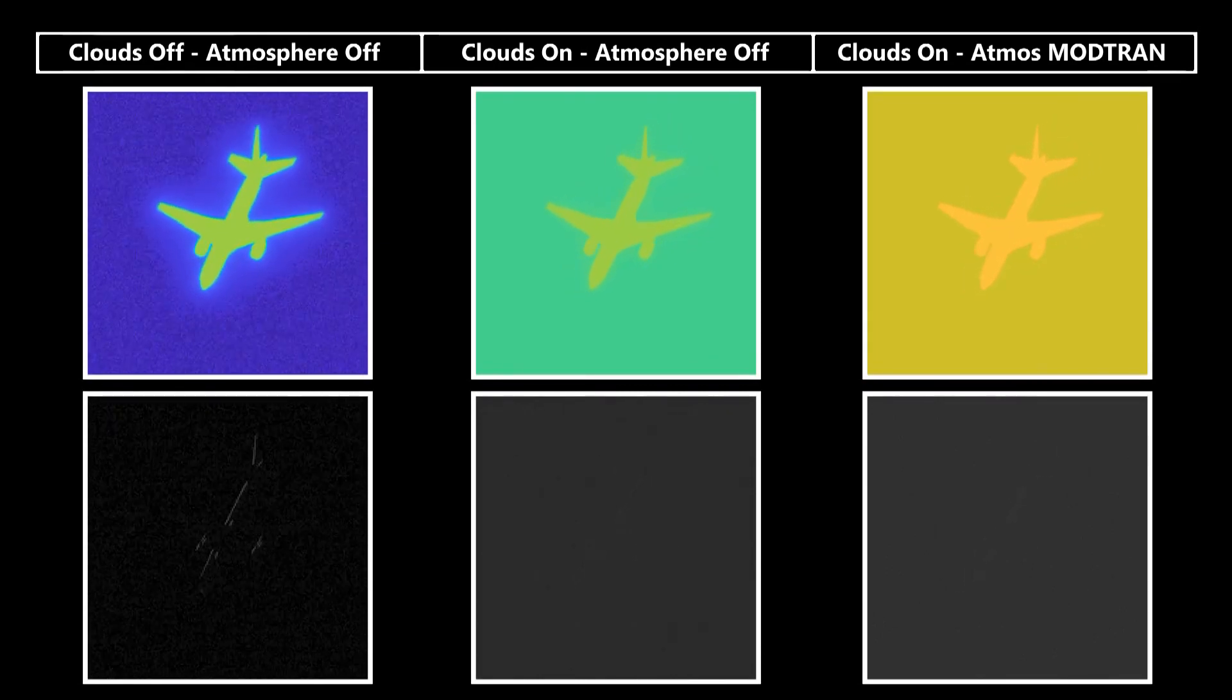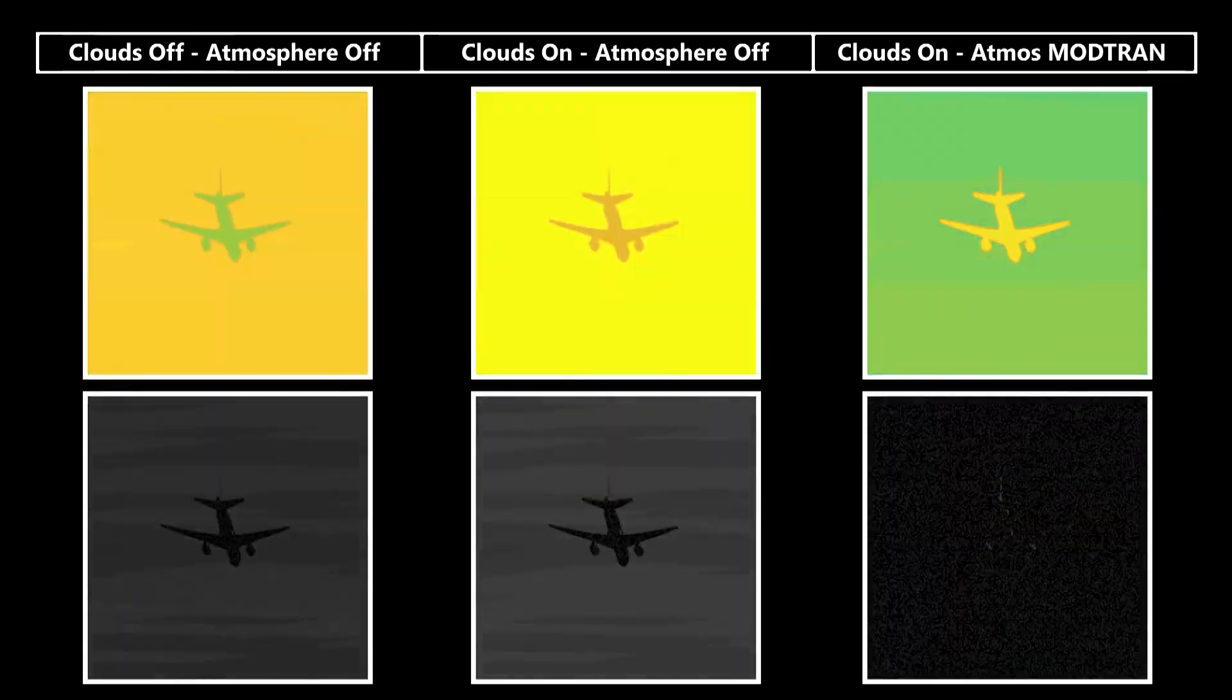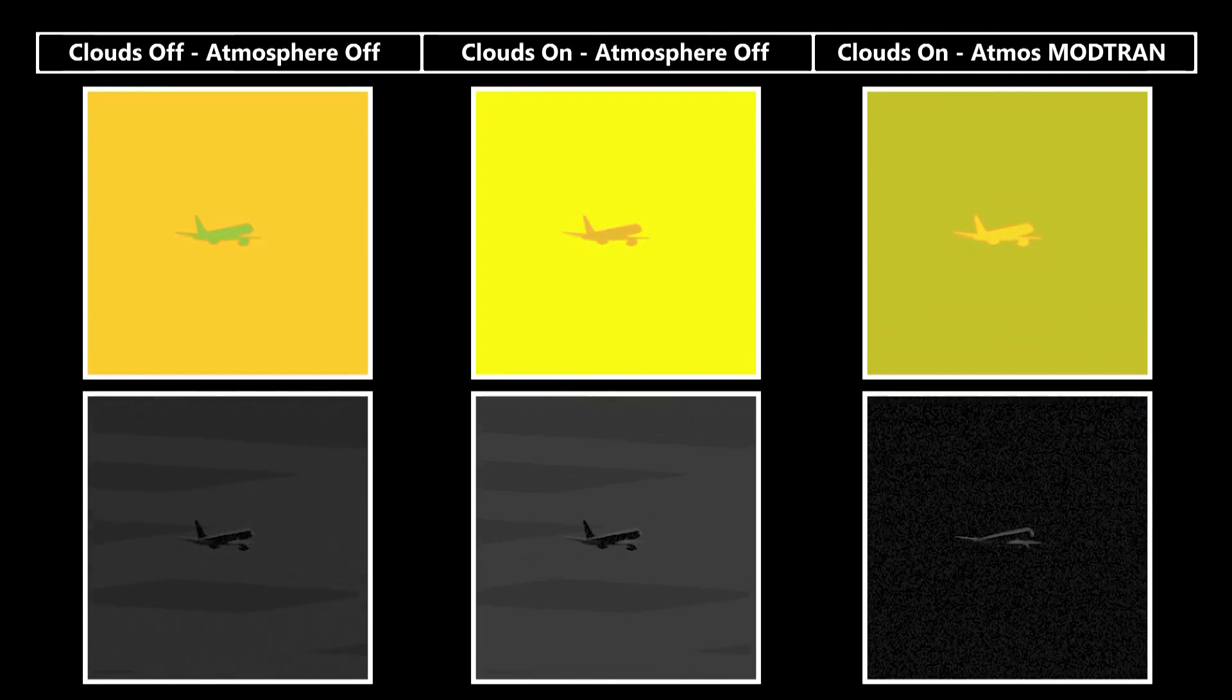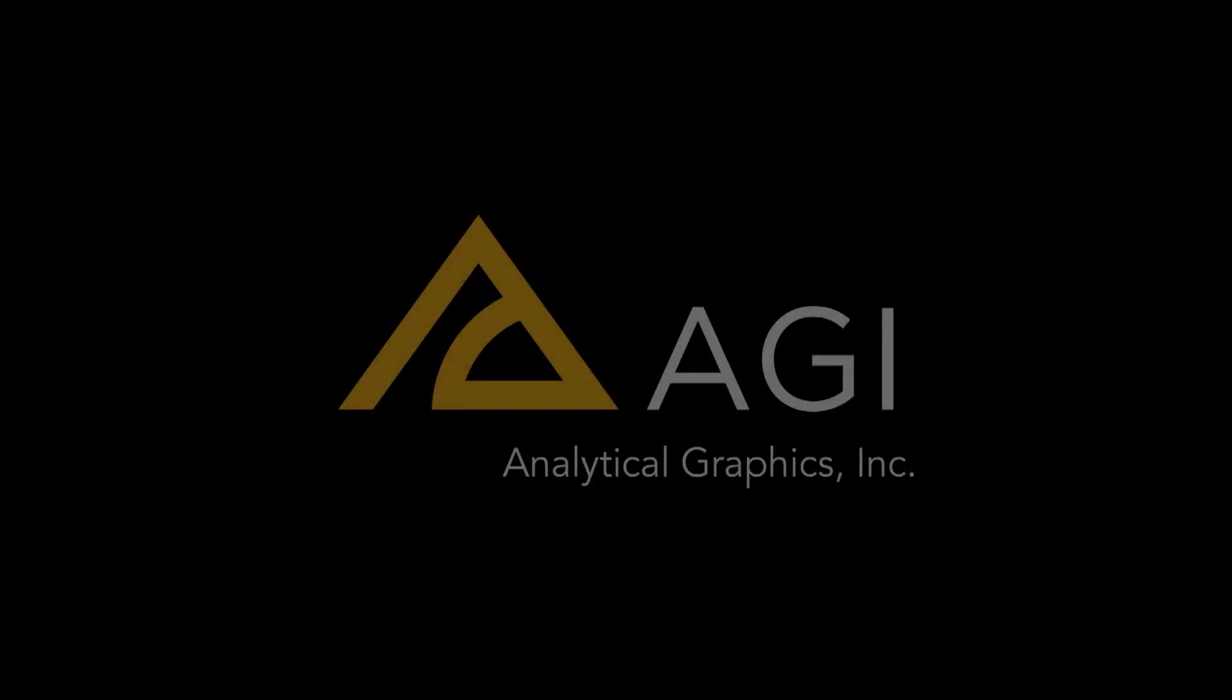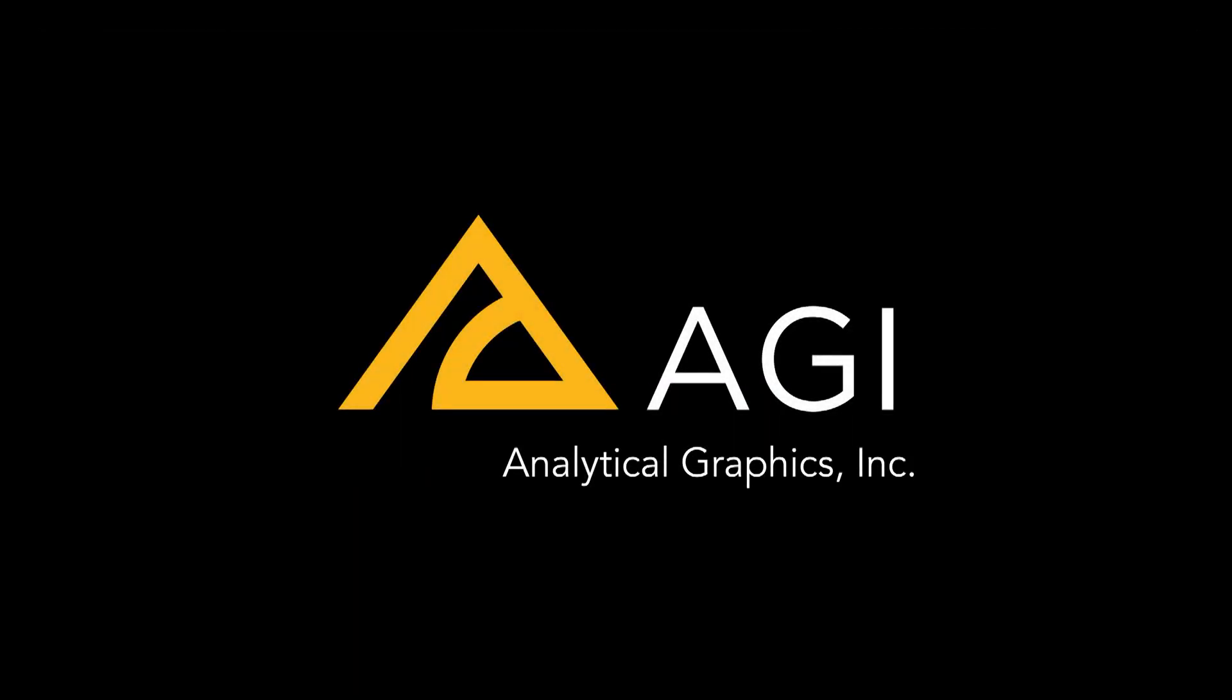Using EOIR, you have the ability to model, simulate, and analyze these effects. So model these in your mission, and you too can account for potential targets becoming obscured.